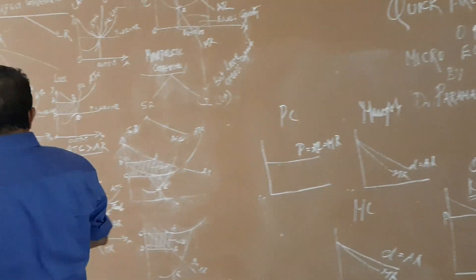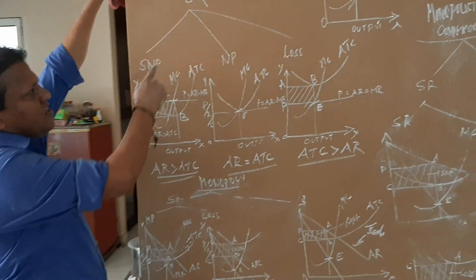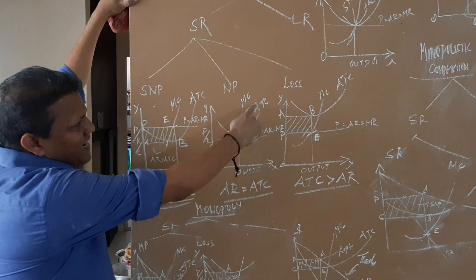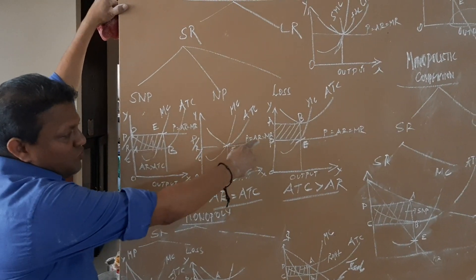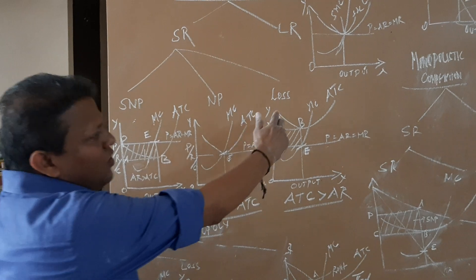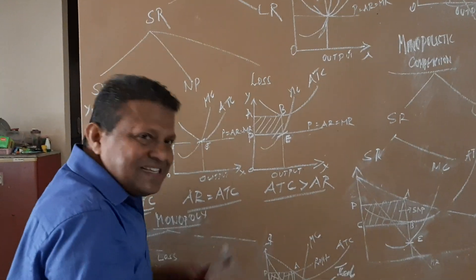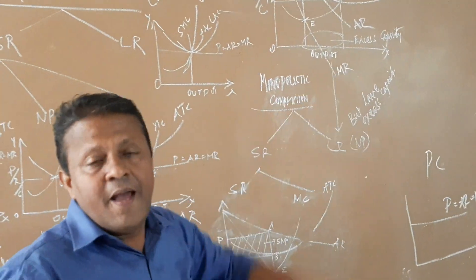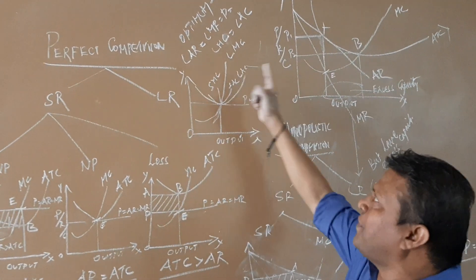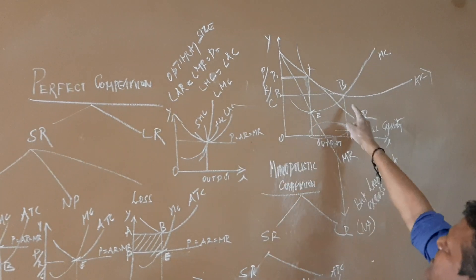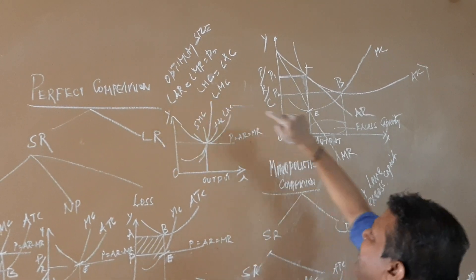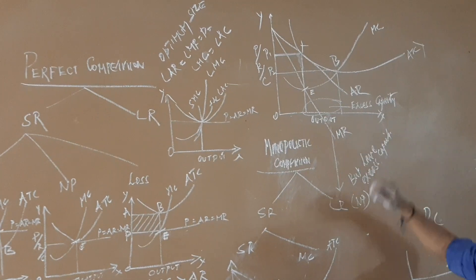Now, how does price-output determination happen? In a competitive market in the short run, supernormal profit happens when average revenue is greater than average total cost. Normal profit happens when average total cost exactly equals average revenue — note that average revenue includes some percentage of profit. Loss happens when ATC is greater than AR. This principle applies whether in monopoly or monopolistic competition. In monopolistic competition, in the long run there is also normal profit. The difference is that in the competitive market the firm is of optimum size, while in monopolistic competition the firm has excess capacity. In oligopoly, price-output determination does not clearly take place.